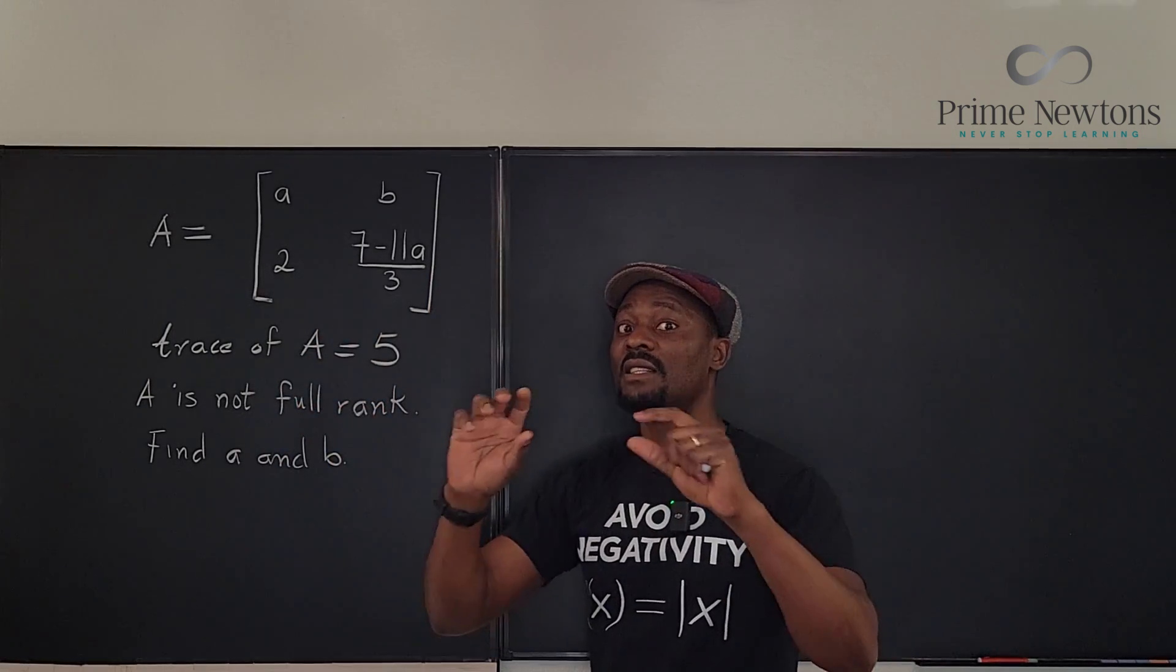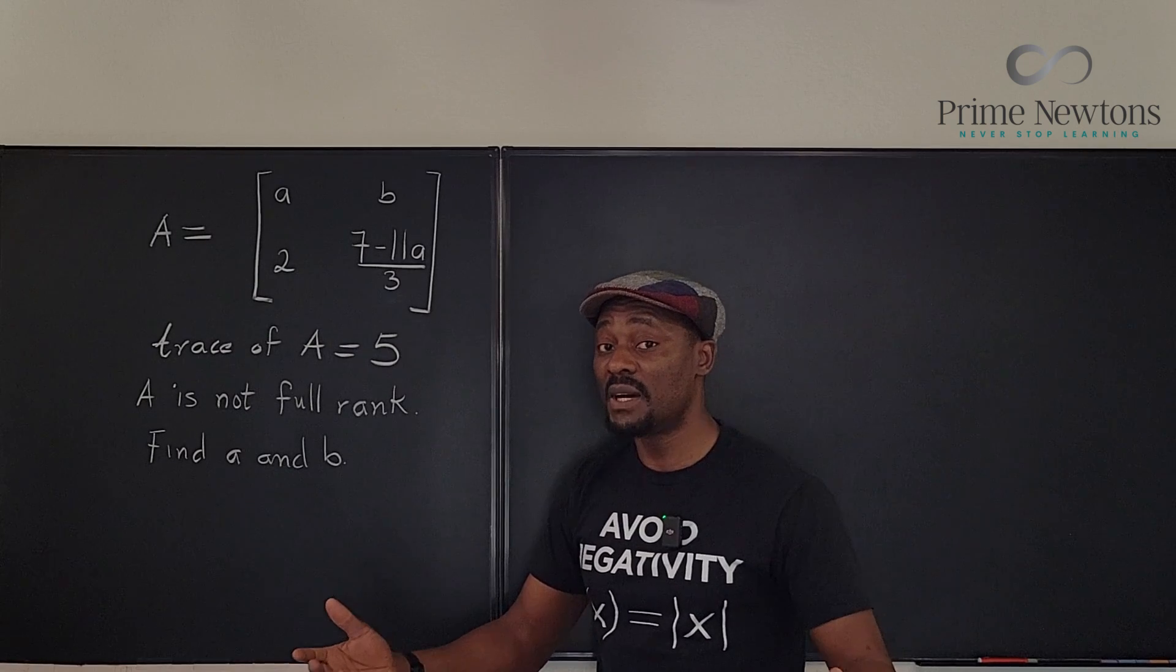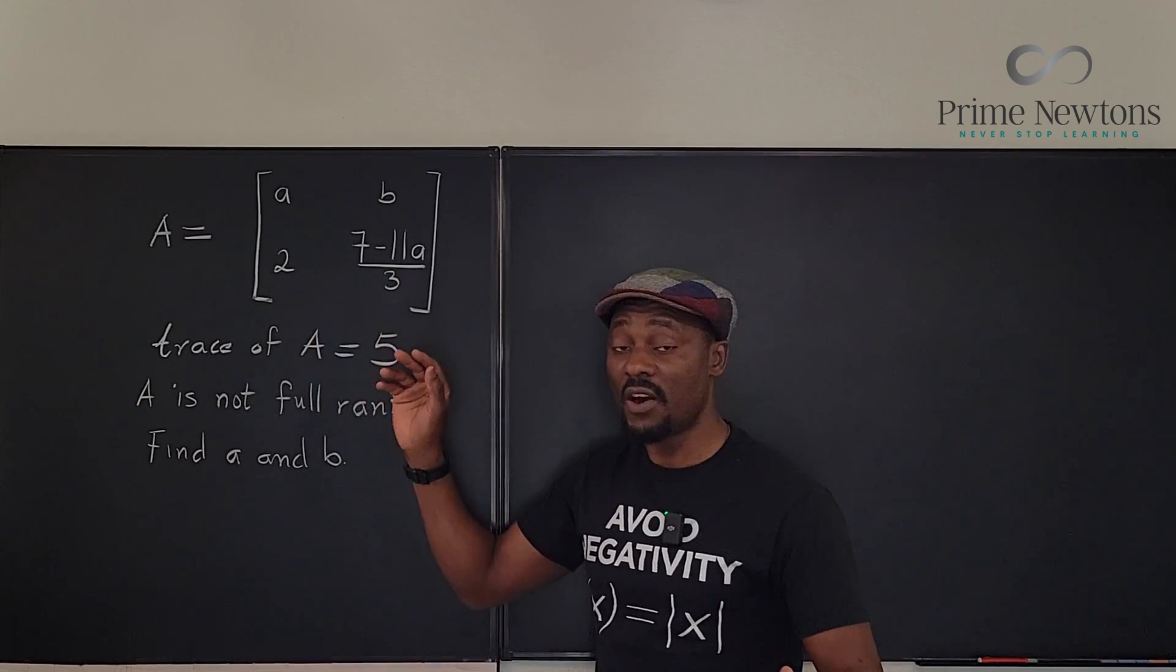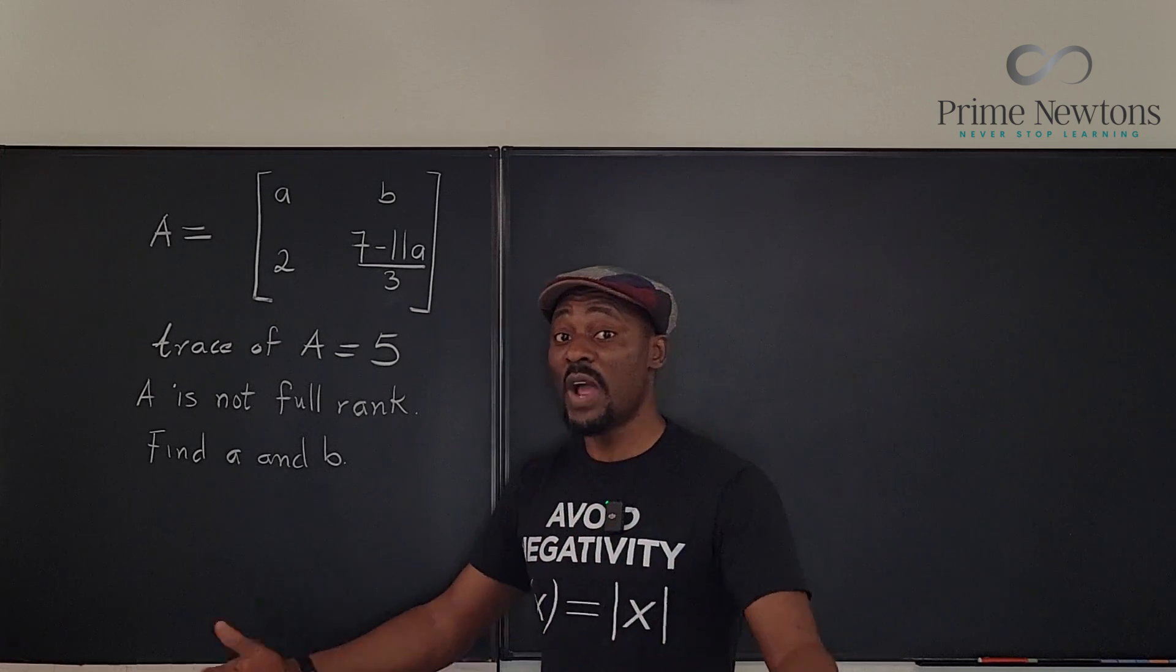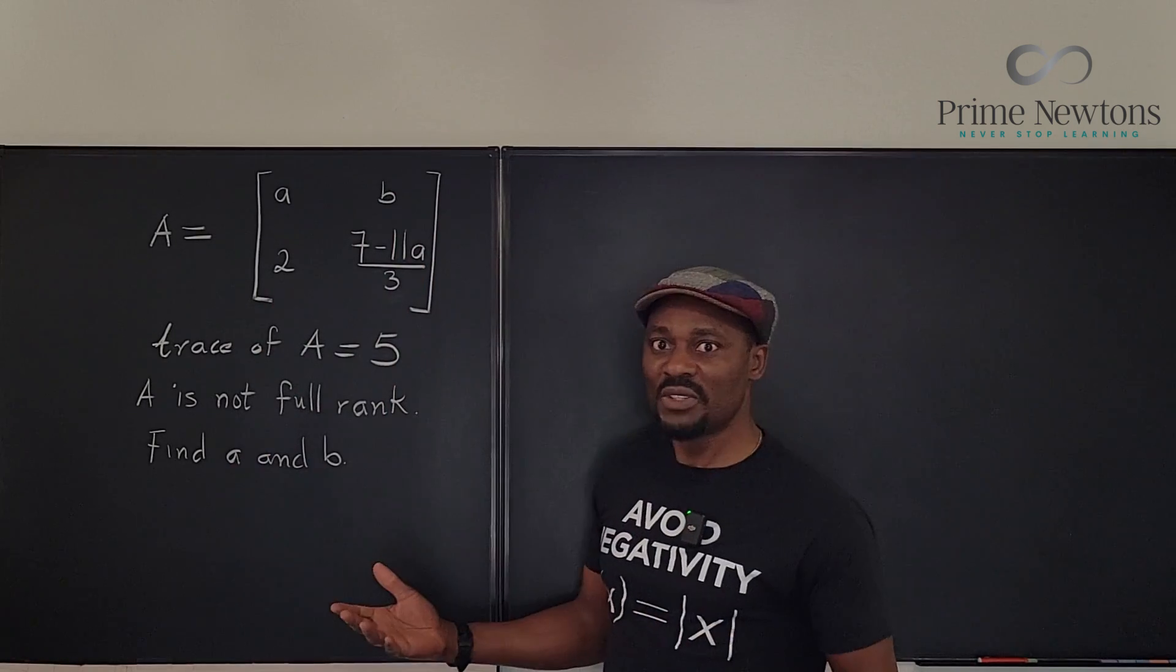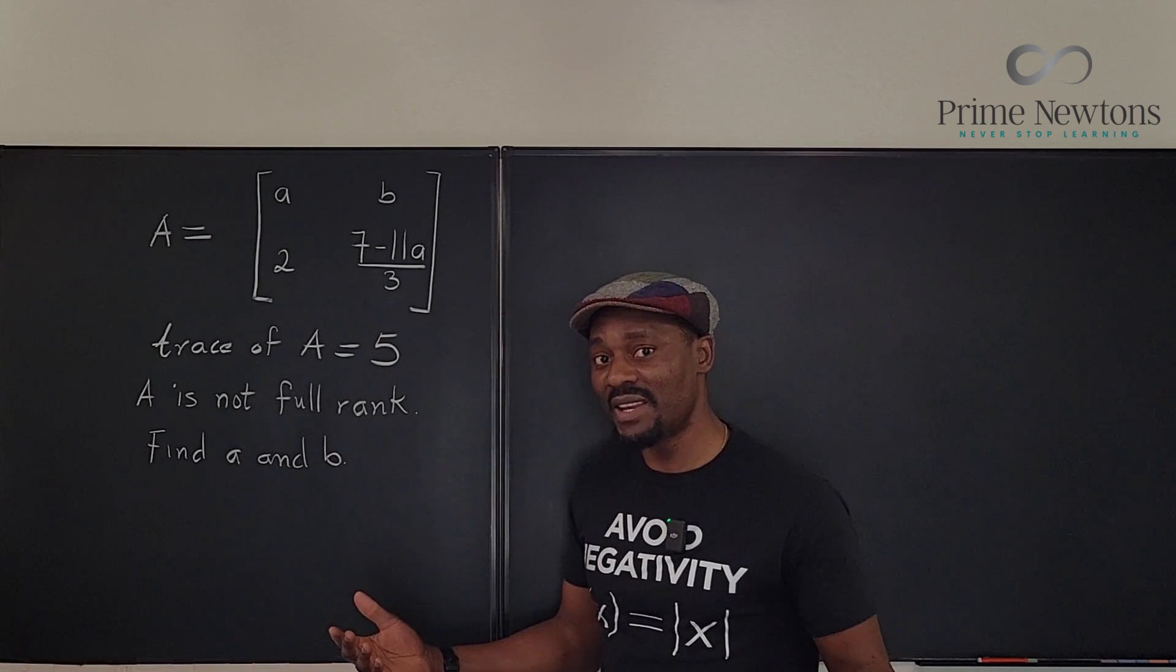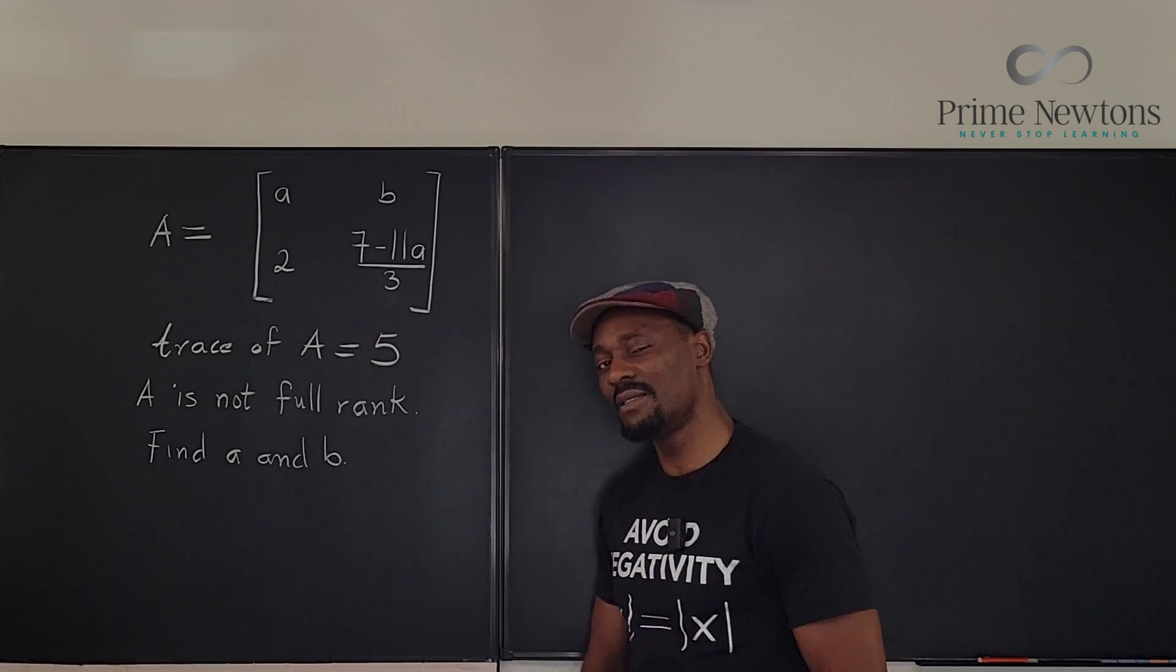Or if you try to take the determinant of that matrix, you're going to get a zero because two columns in it are not linearly independent. Or if you reduce it to reduced row echelon form, you're going to get a column of zeros or a row of zeros. But that's it. That's all you have to do. Let's get into the video.